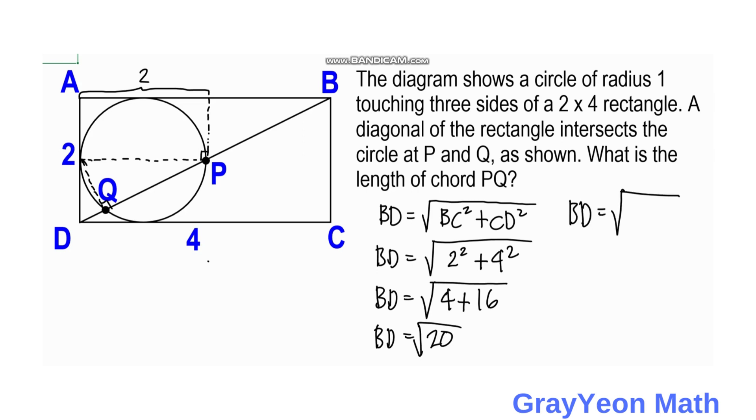BD equals the square root of 20. For BD, it's 2 root 5. So we have 2 root 5 for BD.